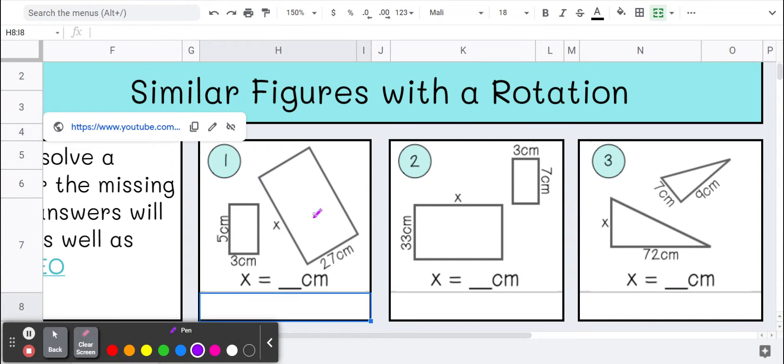So for number one, we have two shapes. This shorter side corresponds to this shorter side, and this longer side would match up with this longer side.